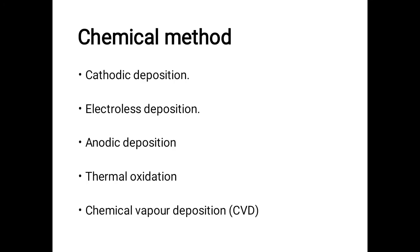Under chemical methods there are mainly five different methods. The first is cathodic deposition, the second is electroless deposition, then anodic deposition, thermal oxidation, and the last is chemical vapor deposition (CVD). CVD has already been discussed on this channel. In this video we will be studying the first four methods.